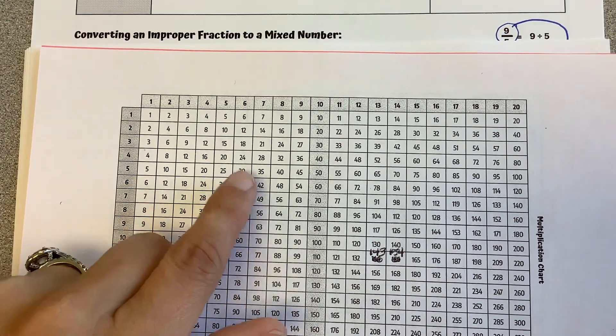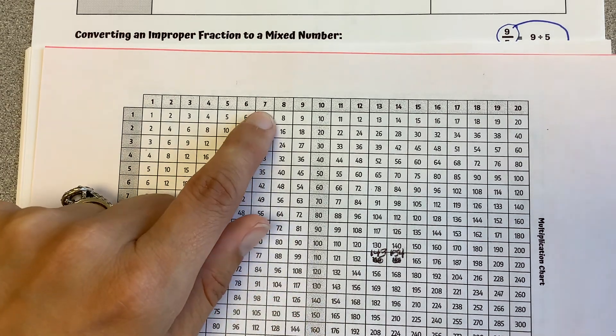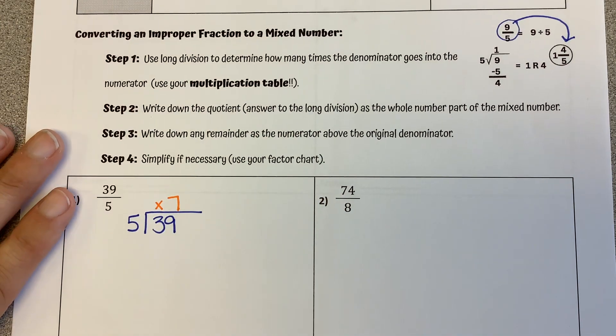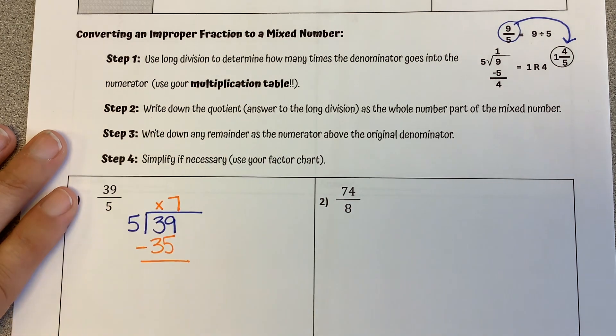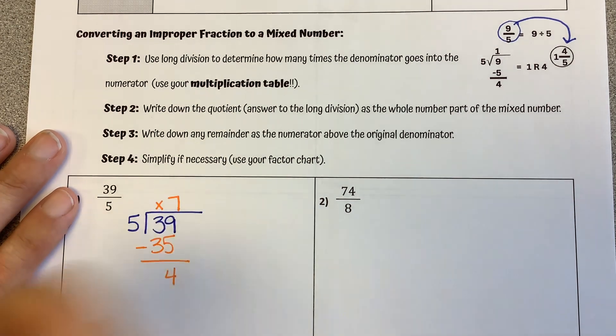So 5 goes into 39. 5, 10, 15, 20, 25, 30, 35. 40 is too big. So 35 is 7 times. So it goes in 7 times. 5 times 7 is 35, and I subtract. 39 minus 35 is 4.